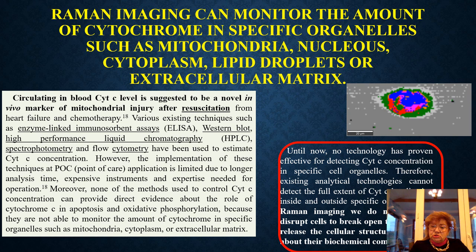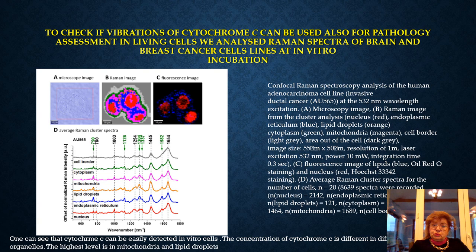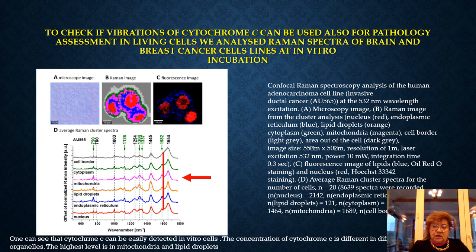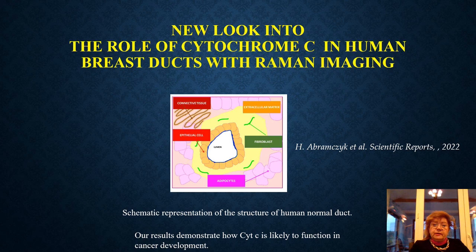Raman imaging can be used to analyze the biolocalization in different organelles without breaking the cell and without releasing the biological material, to study the biological composition. To check if vibrations of cytochrome C can be used for pathology assessment in living cells, we analyzed Raman spectra of brain and breast cancer cell lines in in vivo incubation. One can see that for the cell lines, the characteristic band of cytochrome C is visible, and the concentration of cytochrome C is different in different organelles — with the highest level in mitochondria.